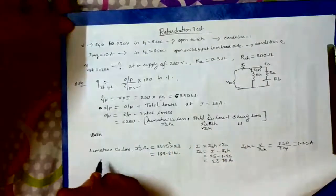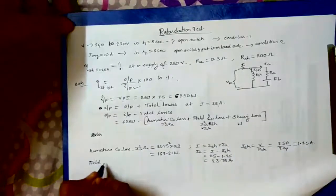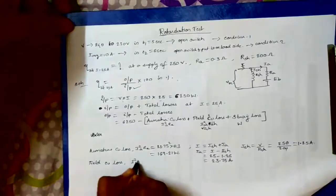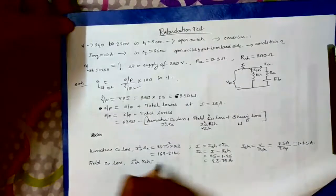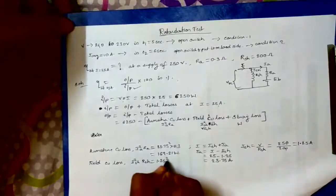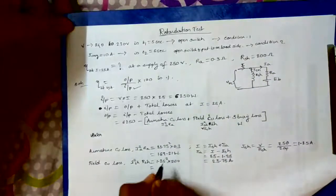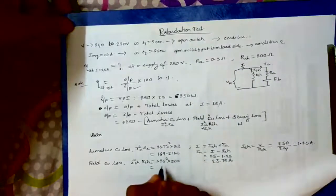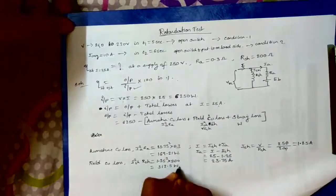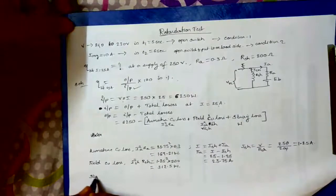Next, I squared SH into RSH, that is field copper loss. ISH is 1.25 square, RSH is 200. That will result in 312.5 watts, which is field copper loss.